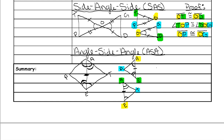Now start highlighting. One arc on the top triangle is A; one arc on the bottom is E. Two arcs on the top is E; two arcs on the bottom is A. For the proof, write the angle first: one arc angle is A, so A must be the middle letter — angle P-A-E is congruent to angle T-E-A. Next, the side: segment A-E is congruent to segment E-A. Lastly, the double arc angle: E is the middle letter, so angle A-E-P is congruent to angle T-A-E.